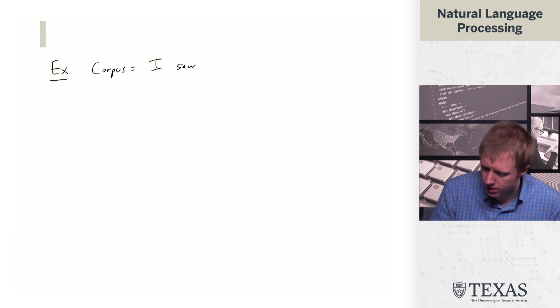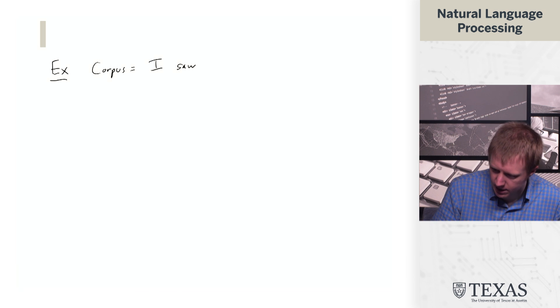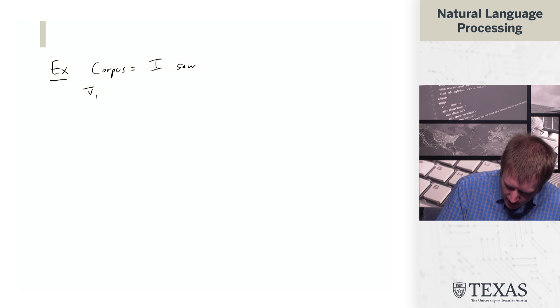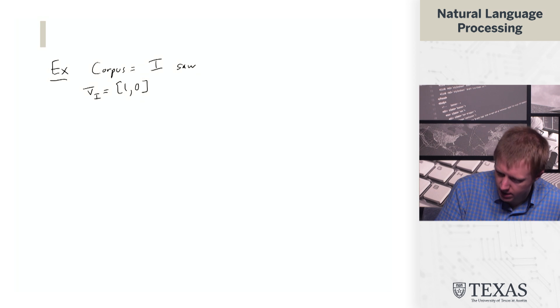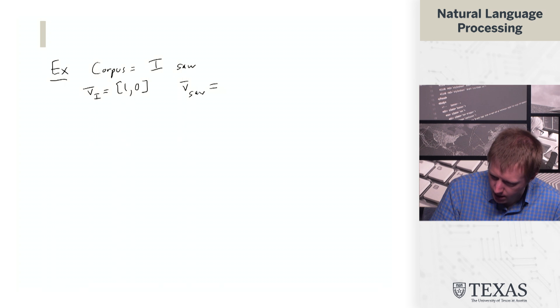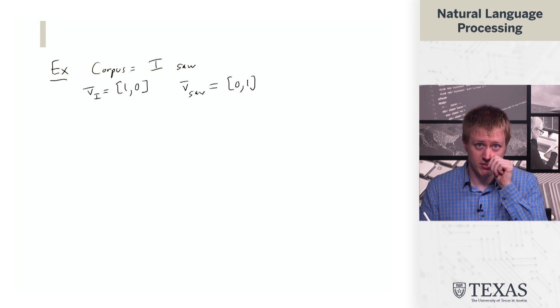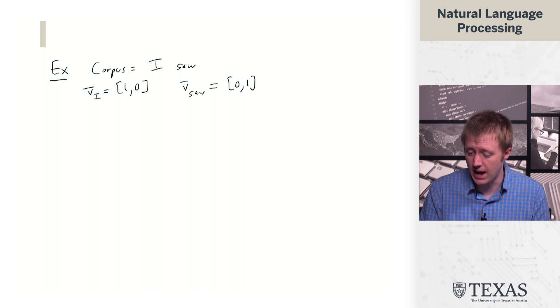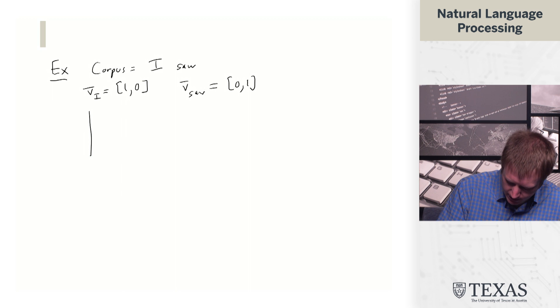So we have a relatively simple corpus here. And then let's assume that we have D equal to, and we just have the two words, I and saw, and they look like this. So this is V saw, and this is VI.